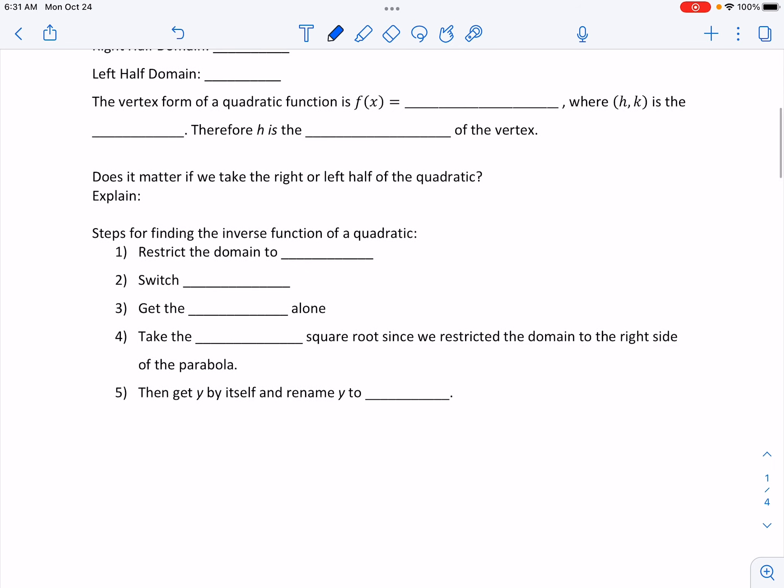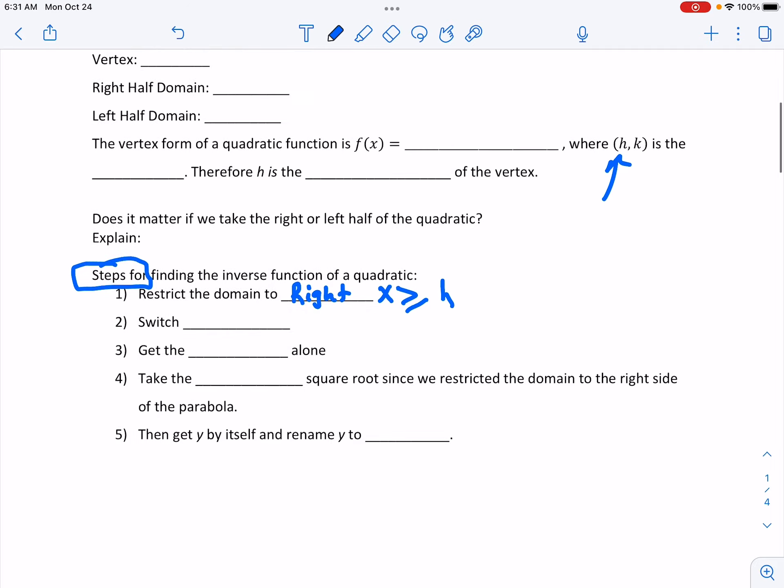Let's go down here and start with how do we find the inverse when we're looking at this as an equation rather than at the graph. First thing you're gonna do is restrict the domain to the right-hand side which will always be x is greater than or equal to the h value. The h value will be the first value in the vertex.